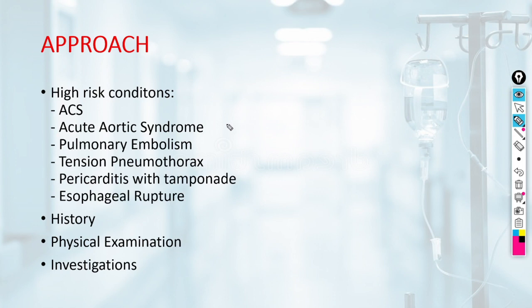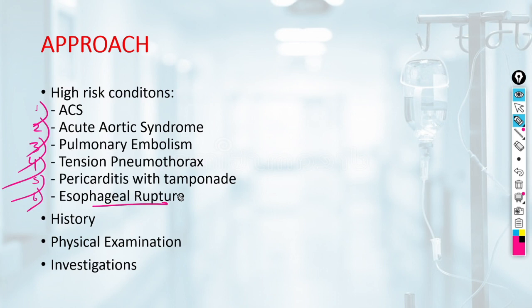Given the broad set of causes and serious complications, the priorities of initial clinical assessment should include: first, assessment of the patient's clinical stability; second, whether the patient has a life-threatening underlying cause. Life-threatening causes to be ruled out first are acute coronary syndrome, acute aortic syndrome, pulmonary embolism, tension pneumothorax, pericarditis with tamponade, and esophageal rupture. The approach relies on history, physical examination, and investigations.